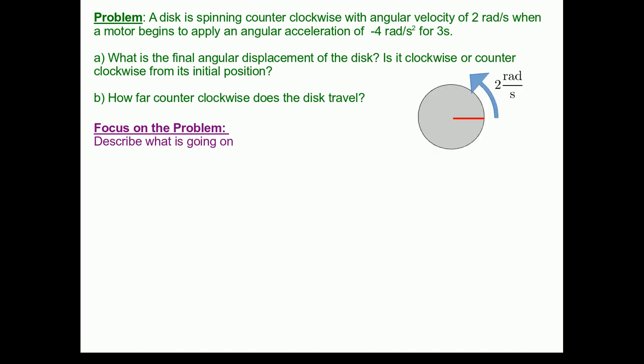Now that we've got a useful picture, we can follow our problem-solving framework, and the next step is to begin to describe what's going on in words. Well, the disk is spinning counterclockwise, which means that the angular velocity is initially positive. At some time, there begins to be applied an angular acceleration that is negative. Now, we don't have a lot of experience yet with these rotational quantities, but there's a nice analogy to this particular situation.